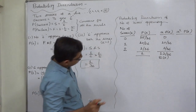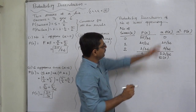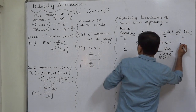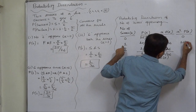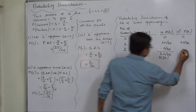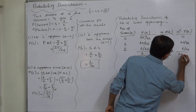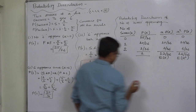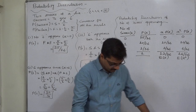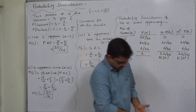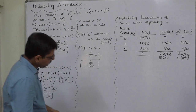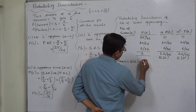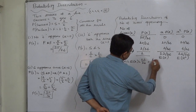To calculate variance, we also need X squared times P(X), which means X times (X times P(X)): 0 times 0 is 0; 1 times 10/36 is 10/36; 2 times 2/36 is 4/36. So the sum is 14/36 — this is E(X²). The mean equals E(X), which is 12/36, that is 1/3.